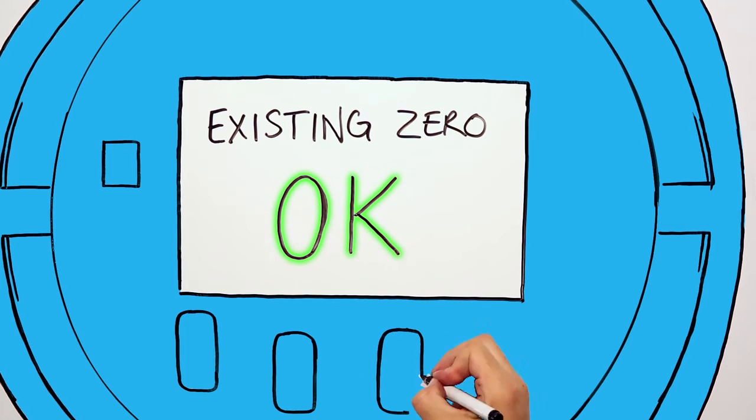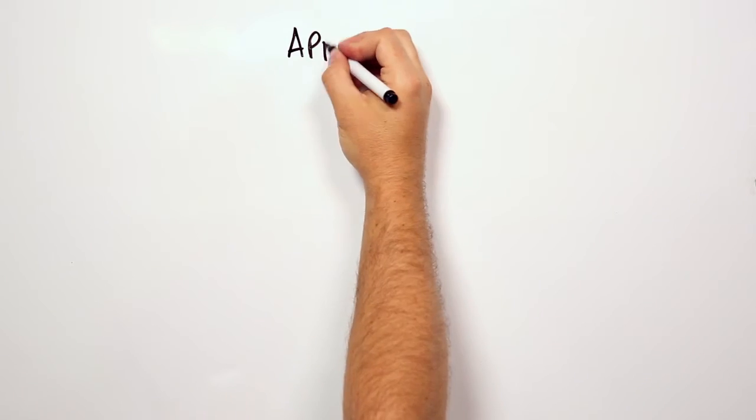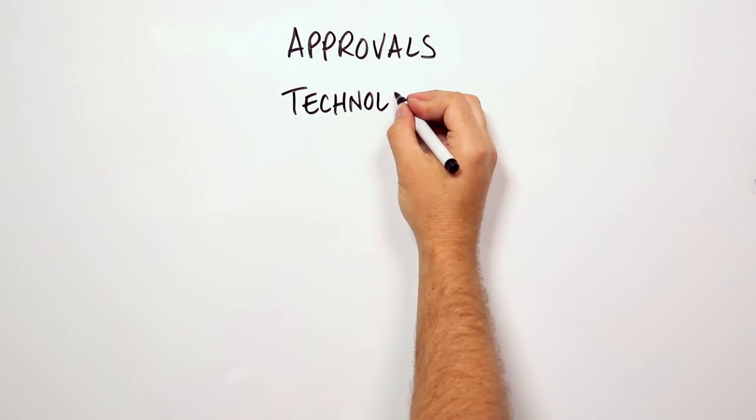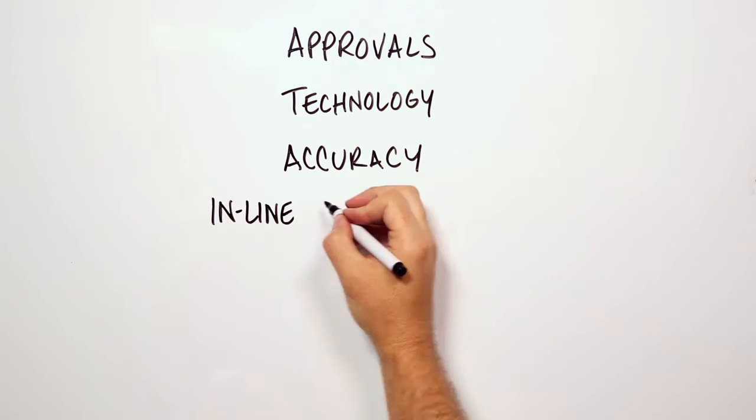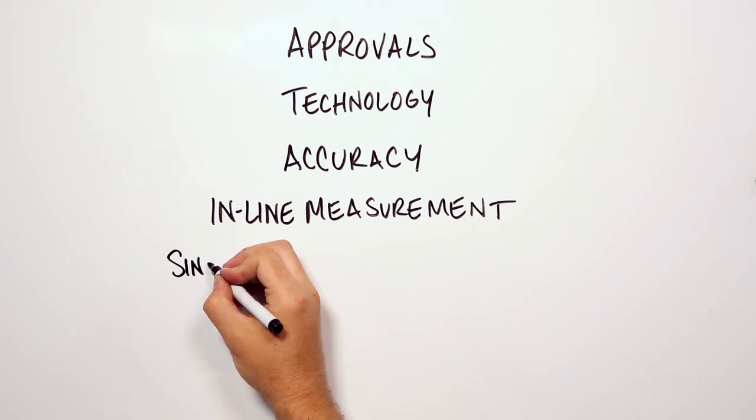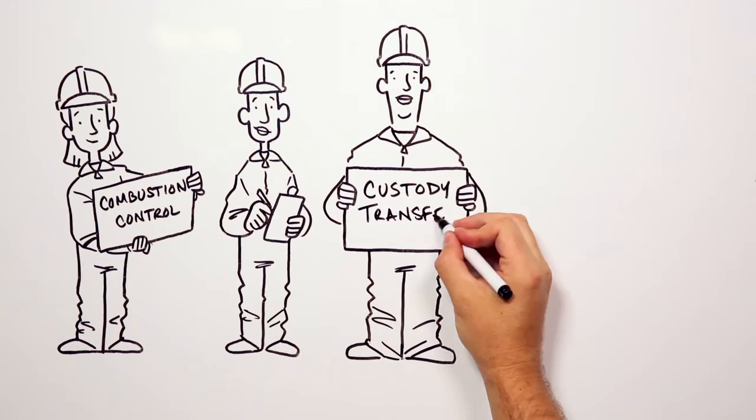Micro Motion products provide Andrew the solutions he needs. Third-party agency approvals. Proven technology. The best gas mass flow accuracy. Inline density and specific gravity measurement. Single device measurement. And a dedicated team of experts.